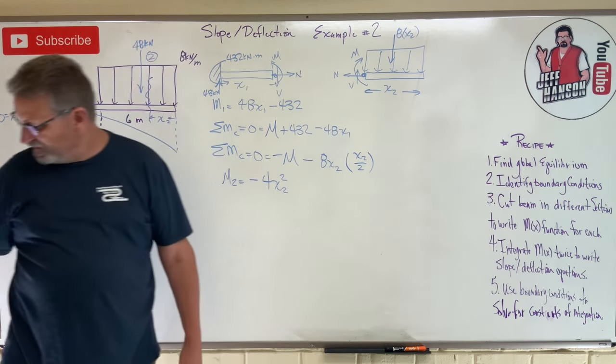The slope condition at the interface is a bit confusing. Since x2 is measured from the opposite side, x is effectively negative there, which flips the sign of the slope. So theta one equals negative theta two — not simply theta one equals theta two. This is only because we built the section two free body from the right side. That gives us four boundary conditions total.